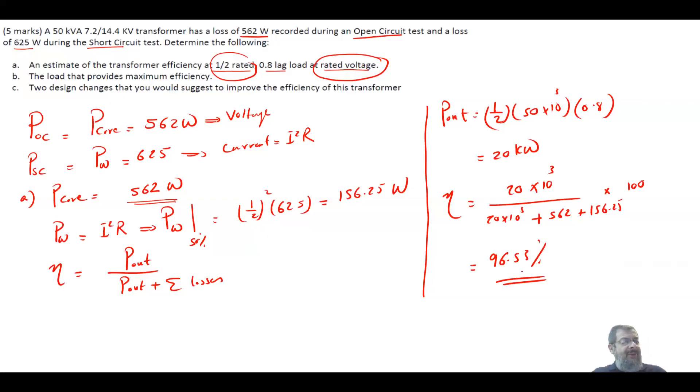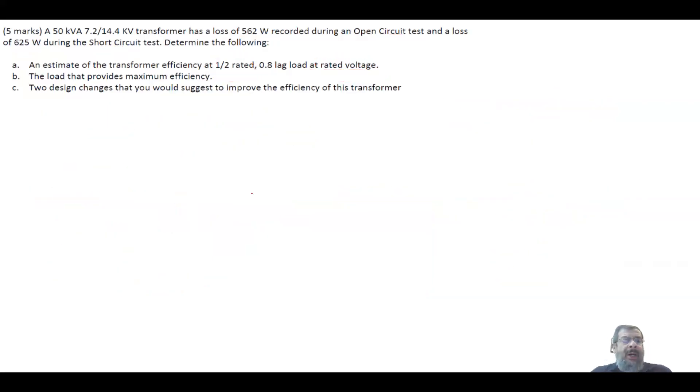So that is the efficiency of your transformer. Let's go to part B, the load that provides the maximum efficiency. What is the load condition at which you will get your maximum efficiency? Now, the maximum efficiency happens when your Pcore equals the Pwinding. When this happens, you get the maximum efficiency. This is a well-known fact that the transformer has maximum efficiency when the core loss and the winding loss are equal.